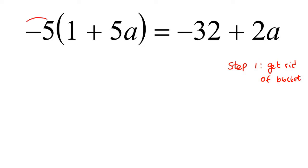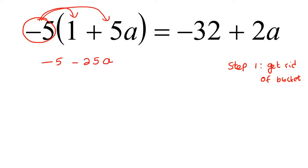The way that this works is you take this negative five, and you're just going to multiply it into everything that is inside that bracket. So that would give you negative five minus 25a. And then on the other side, we just have that over there.